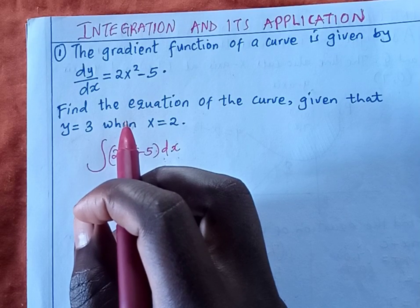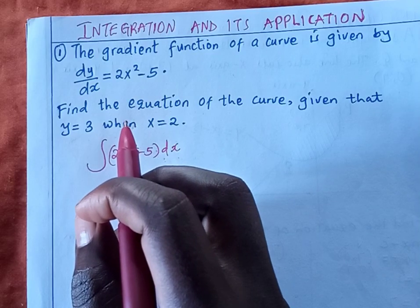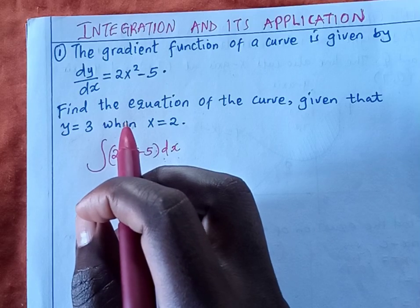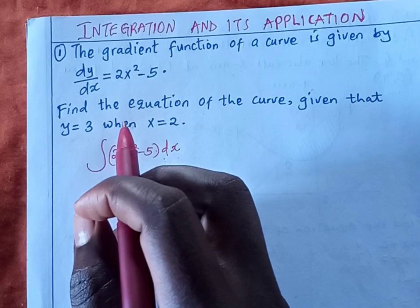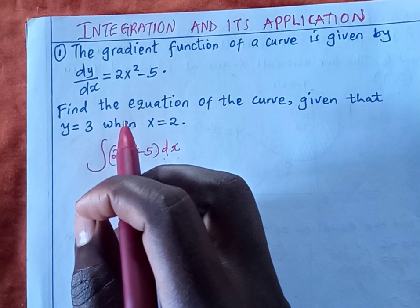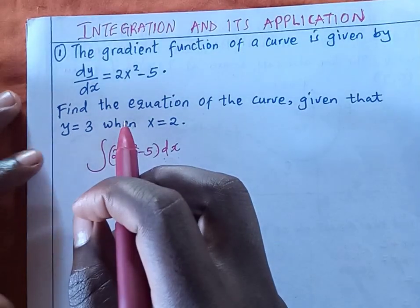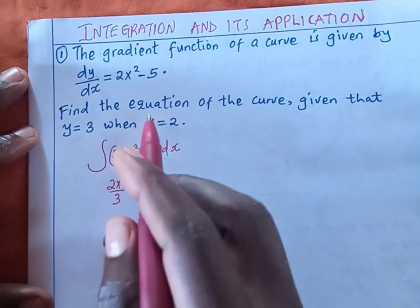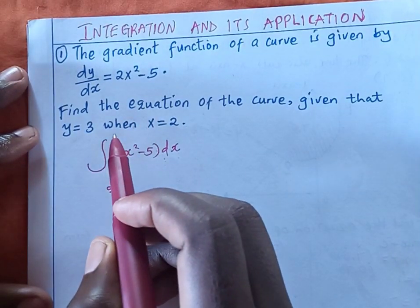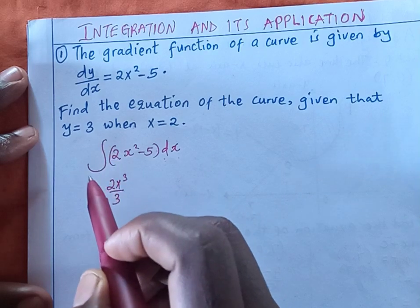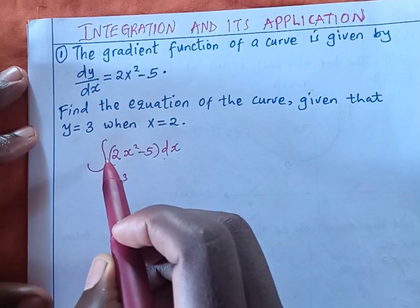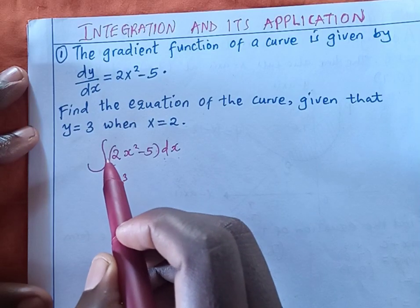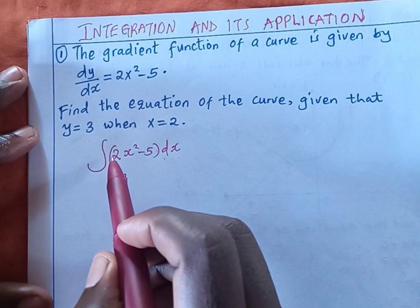The gradient function of a curve is given by dy/dx equals 2x squared minus 5. Find the equation of the curve, given that y equals 3 when x equals 2. Now, what we are going to do — I have already written here — we are going to integrate the equation that we have been given, that is the gradient function, with respect to x.